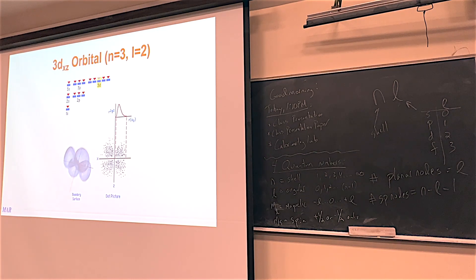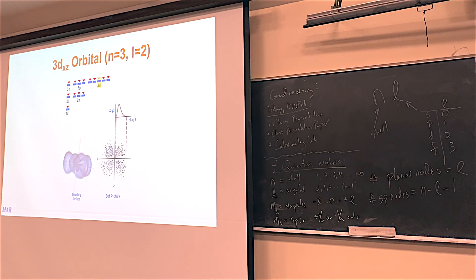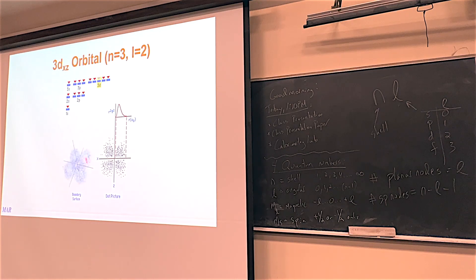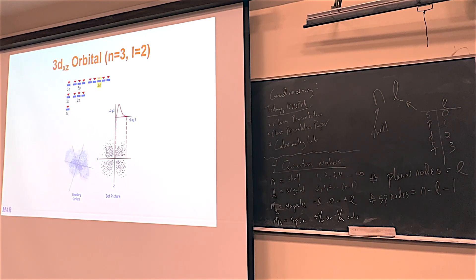The 3DXZ looks really similar — the difference is the orientation. If you have XY and Z axes, the different D orbitals are aligned along different coordinate axes: one was along X and Y, and this one is along X and Z. You can see there are two planar nodes. This is the probability of where the electron is — not right next to the nucleus, not far out most of the time, but in one of these figure-8 regions.